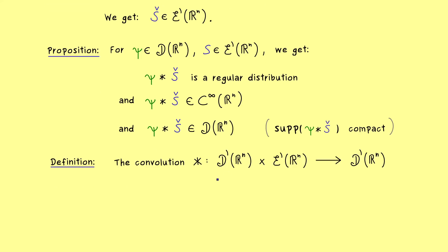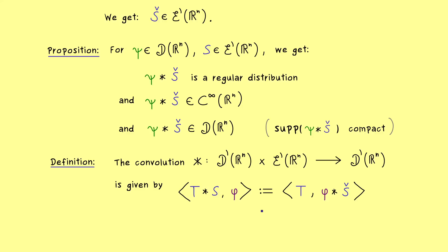Here as promised we have the convolution with two inputs: the first input is a distribution t, and the second a distribution of compact support s. The new distribution that comes out we define as t star s. As always, we do that with a dual pairing where we have a test function phi on the right hand side. The idea is that we push the star to something we already know — in this case the convolution of a test function with a distribution. So what we want is phi star s-check, and this is the new definition of the convolution.